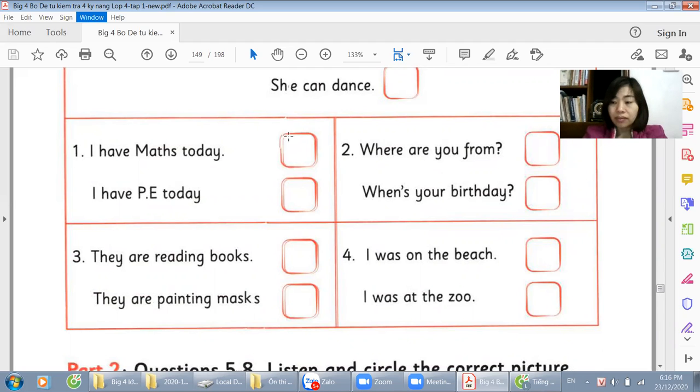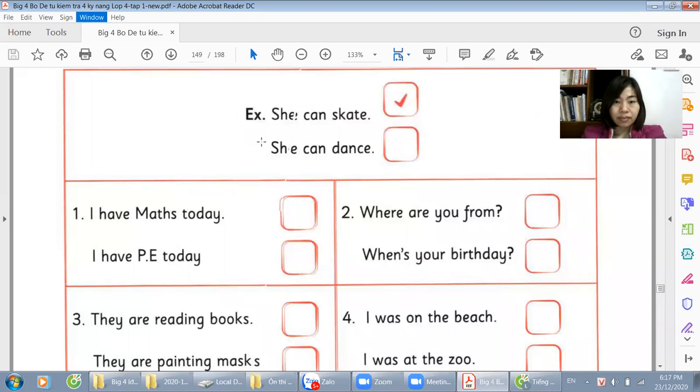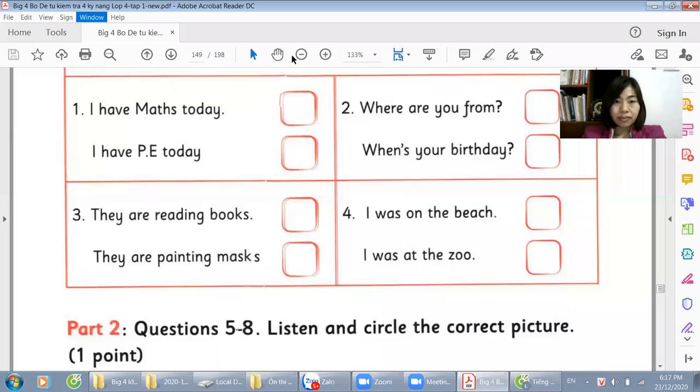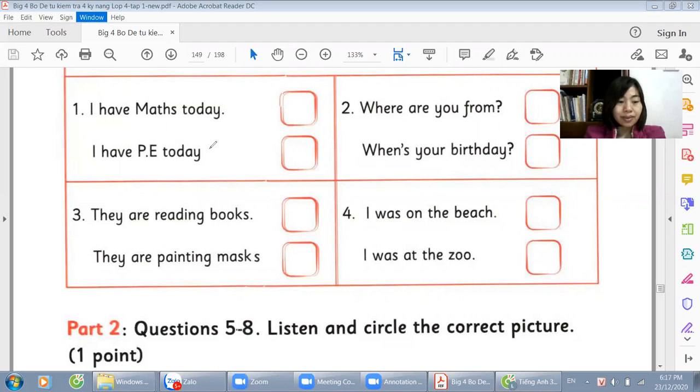End of semester one. Next grade. Part one. Listen to the right sentence. Example: What can she do? She can skate. What subject do you have today? I have maths today. So option one.